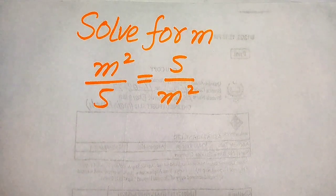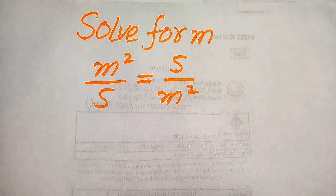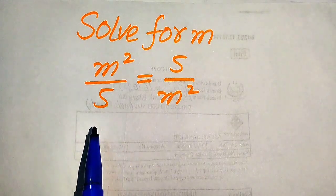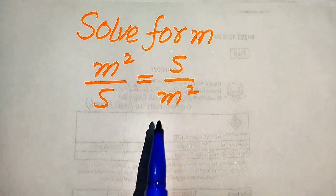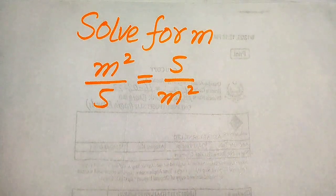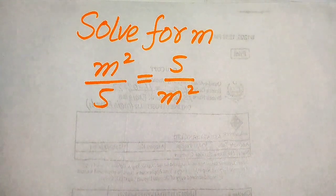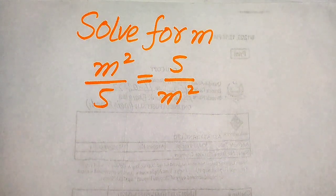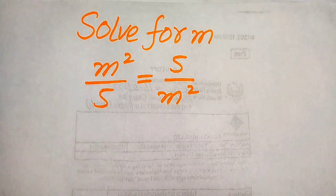Hello everyone. How to solve this problem for the values of m, if we have m square over 5 equals to 5 over m square. We solve this problem for the values of m and find all the roots of this equation.